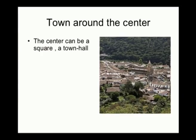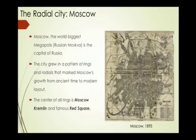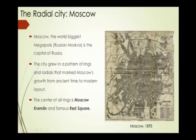These days the central building could be a government institutional building or an educational institution. The center can be a square or a town hall — a basic building that houses all government activities. An example of a radial city is Moscow, one of the world's biggest megapolises and capital of Russia. This city grew in a pattern of rings and radials that has marked Moscow's growth from ancient times to the current modern layout. The center of all rings is the Moscow Kremlin and the famous Red Square. In spite of it being an old town that has emerged over time, it has grown in the same pattern.